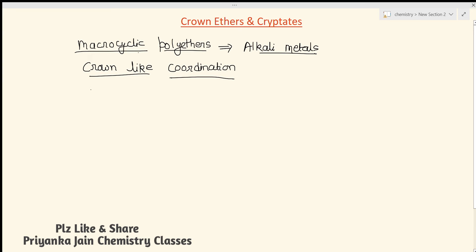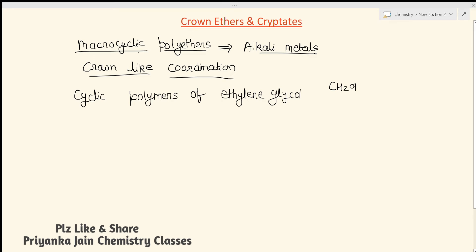Crown ethers are the cyclic polymers of ethylene glycol. Ethylene glycol has the structure CH₂OH–CH₂OH. When you polymerize it in a cyclic form, you get a cyclic structure that is called the crown ether.